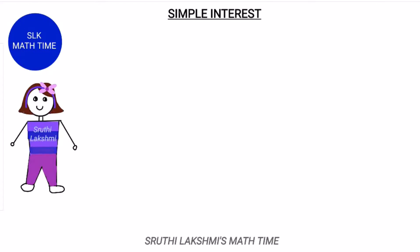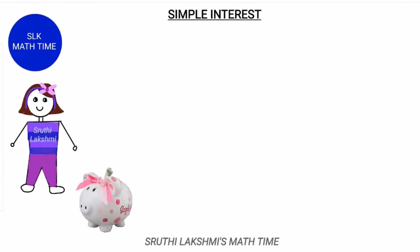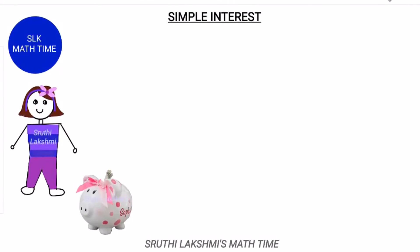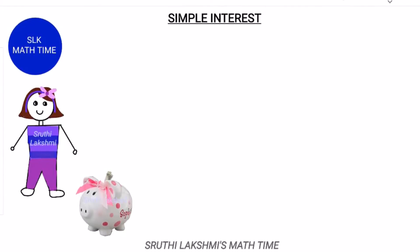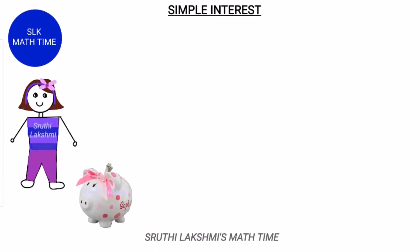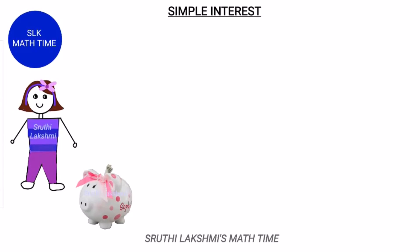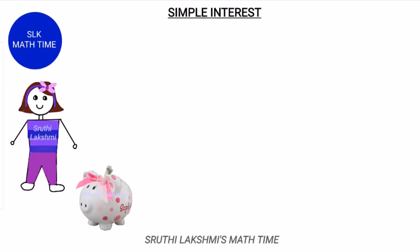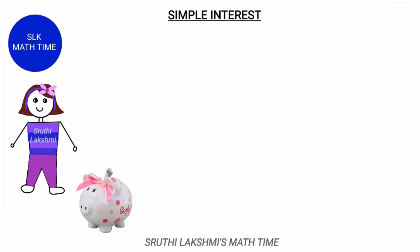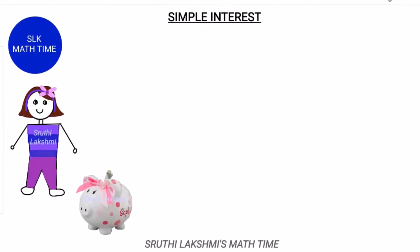Let's see here. Sophia had a piggy bank. In the piggy bank, she had $100 that she earned from the last year's lemonade stand. She thought, when I keep my money in the piggy bank, it is safe. But at the same time, it doesn't increase. Her mom gave a suggestion that she should deposit her money in the bank.